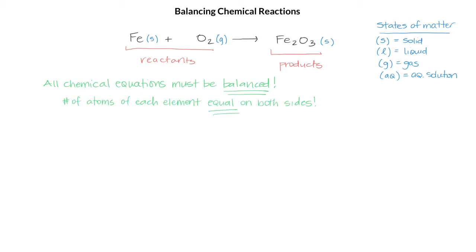Let's take a look at our reaction and see if it is balanced. On the reactant side, we have 1 iron and 2 oxygen. On the product side, we have 2 iron and 3 oxygen.